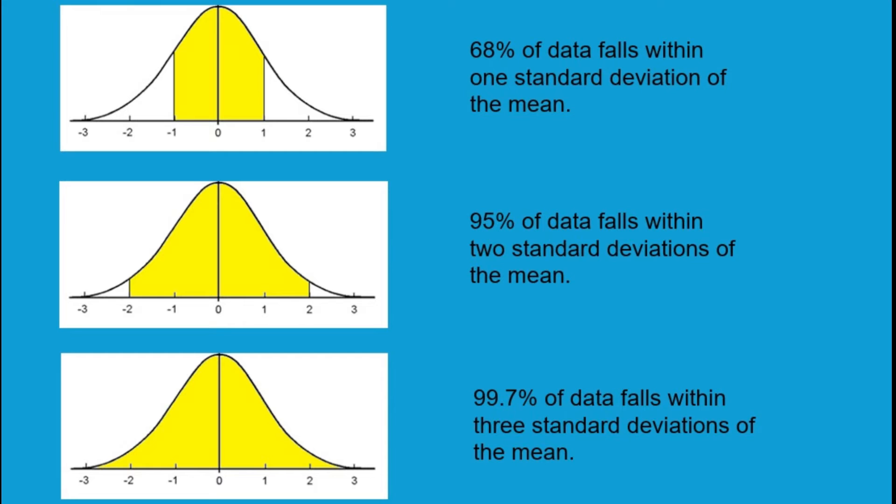First of all it tells us that 68% of our data falls within one standard deviation. So one standard deviation either side of the mean. There's one standard deviation here and over here this is negative one. So one either side is this entire area here. This will be 68% of our data.